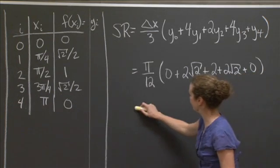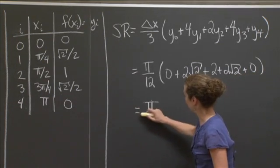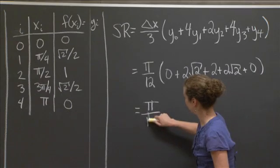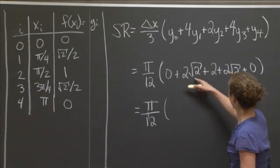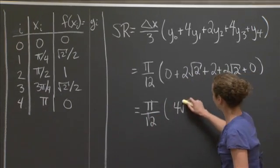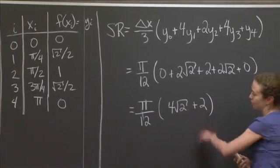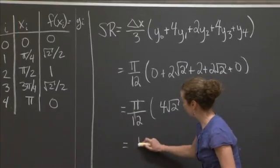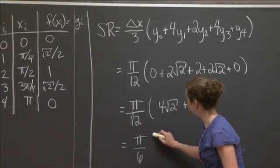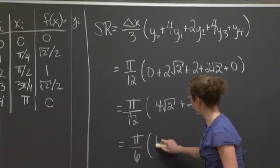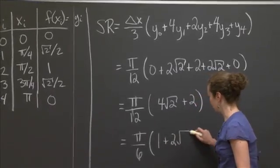So if I simplify all this, I get pi over 12. And then I get 4 root 2 plus 2. And so that we can maybe see a little bit more how it compares, we can simplify this a little bit. I'm going to put the 1 in front, 1 plus 2 root 2.